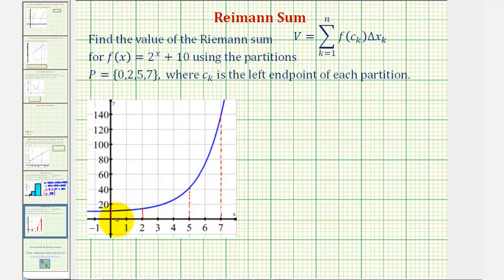This first partition has a width of 2, which would be Δx. The second partition has a width of 3, which would be Δx. And the third partition has a width of 2, which would be Δx.